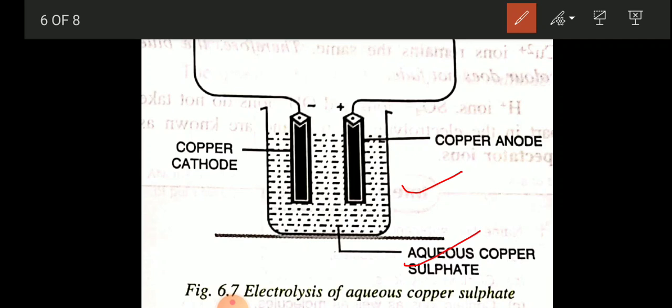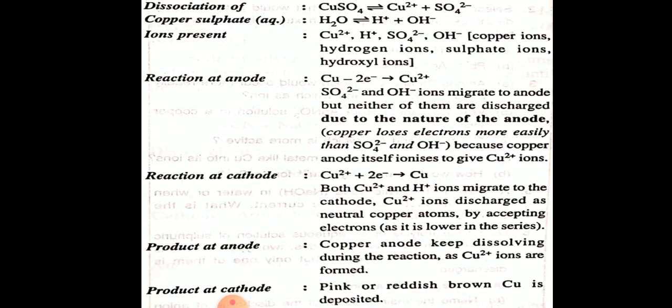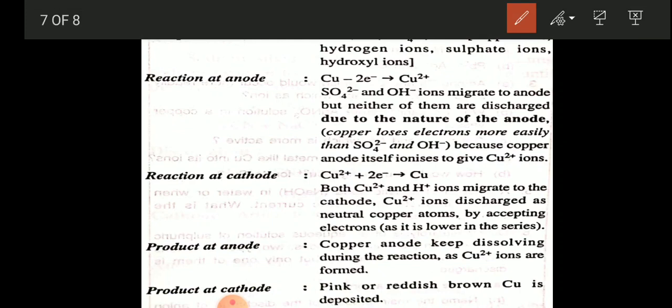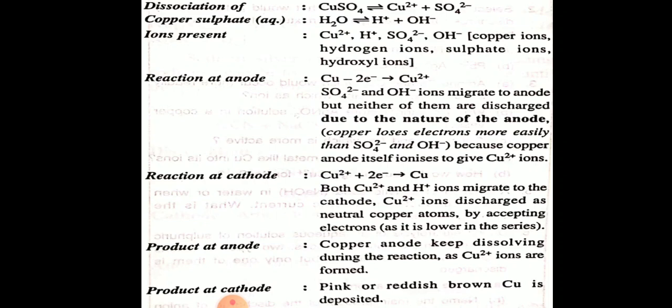Once current starts flowing, aqueous copper sulfate CuSO₄ decomposes into two ions: Cu²⁺ and SO₄²⁻. Since it is aqueous, water also gives H⁺ and OH⁻ ions. So we have two positive ions — H⁺ and Cu²⁺ — and two negative ions — SO₄²⁻ and OH⁻.